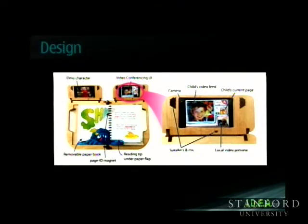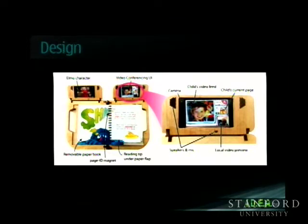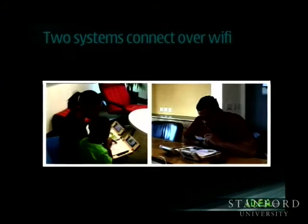The design centers around a physical book augmented with special magnetic tags. There's housing in the device that detects those tags to tell both what book is inserted and what page you're currently on. Then there are two screens — a video conferencing screen giving you a view of the other side, and then there's Elmo. Elmo is really like a third member of the video chat. These two systems connect over Wi-Fi, with one on each side — one for the grandparents and one for the kids and parents.